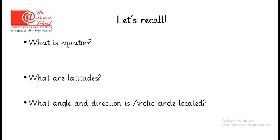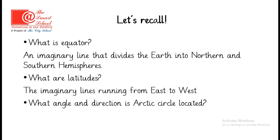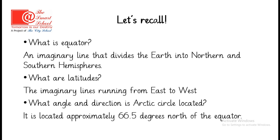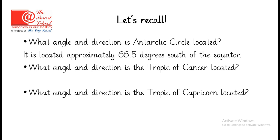Before we start the lesson, let's recall a few basic facts we discussed in our last lesson. What is Equator? Equator is an imaginary line that divides the earth into northern and southern hemispheres. What are latitudes? Latitudes are imaginary lines running from east to west. What angle and direction is Arctic Circle located? It is located approximately 66.5 degrees north of the Equator. What angle and direction is Antarctic Circle located? It is located approximately 66.5 degrees south of the Equator.